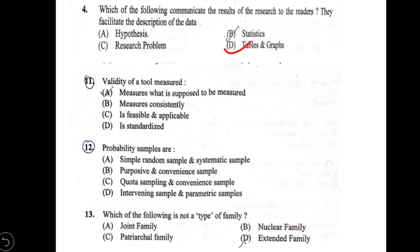Next question: validity of a tool is measured by which of the following? Option A: measures what it is supposed to be measured; B: measures consistently; C: is feasible and applicable; D: is standardized. The validity of a tool means it measures what it is supposed to measure, so option A is correct.